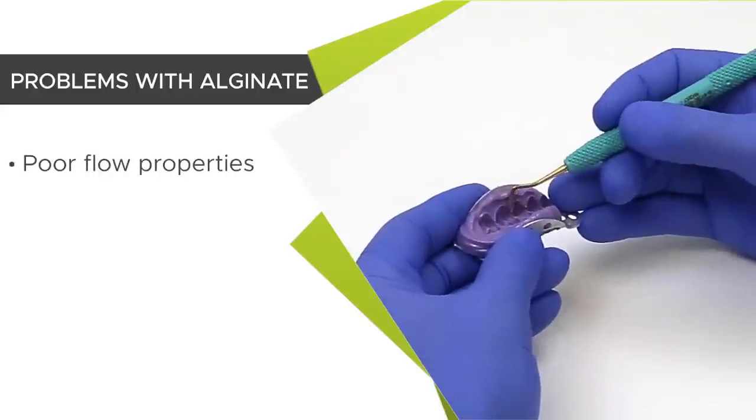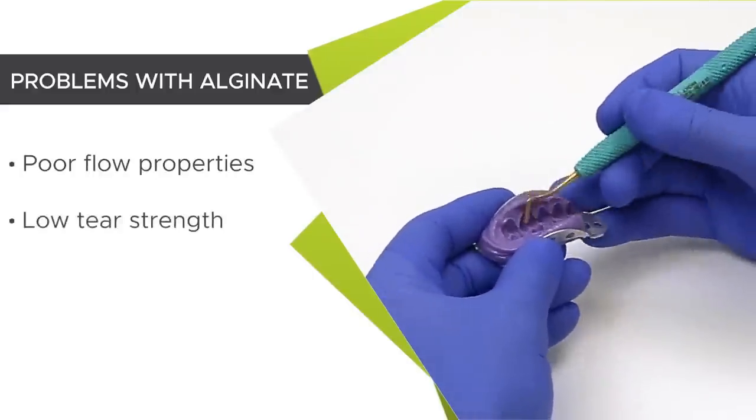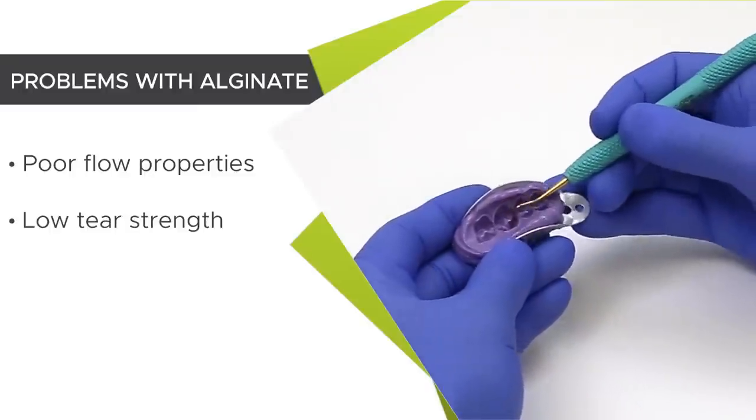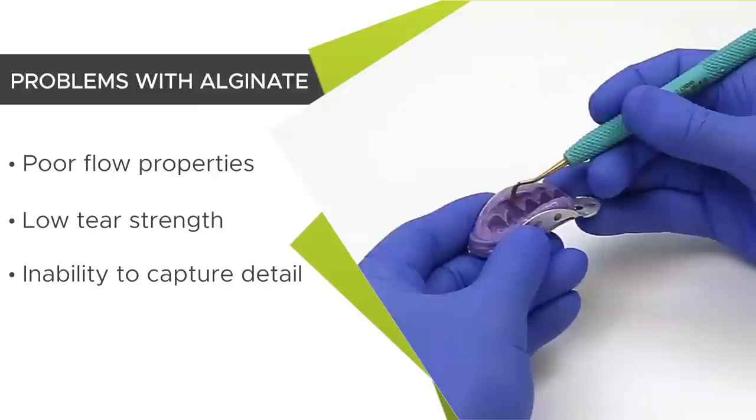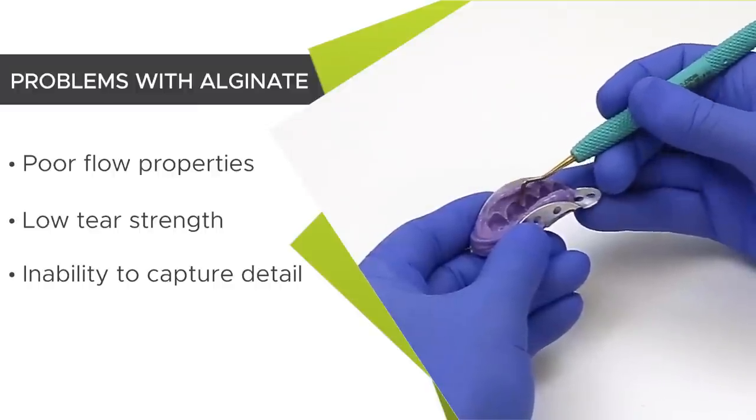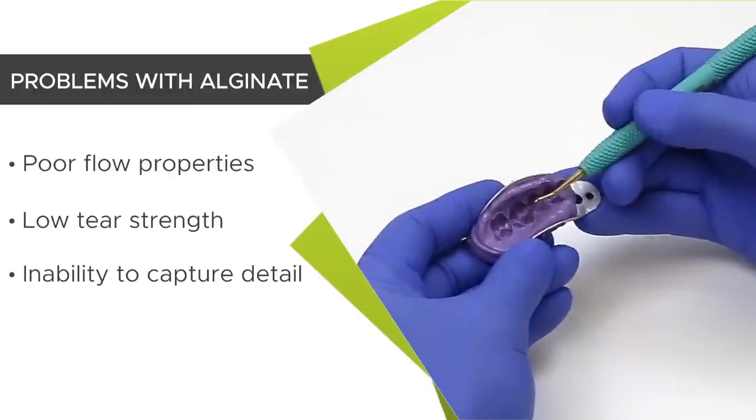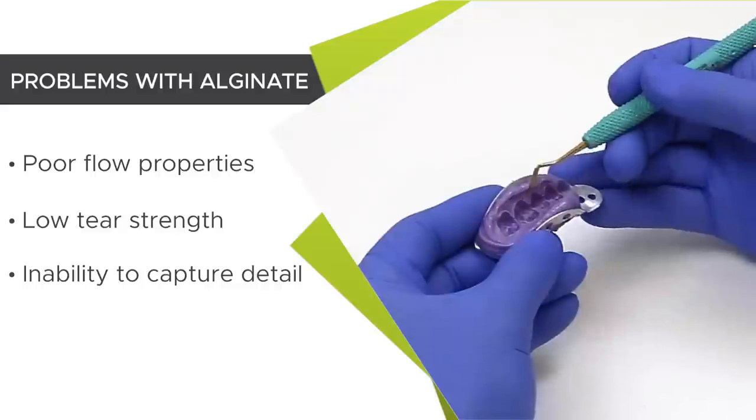Alginate has very poor flow properties and low tear strength. The poor flow properties mean that you're not going to get this occlusal detail and the ability to capture the gingival margin may be in question.